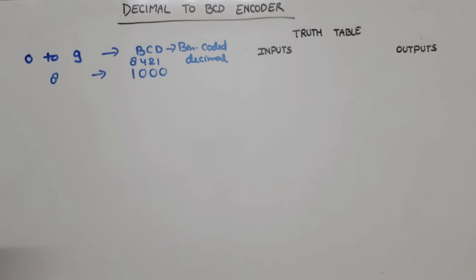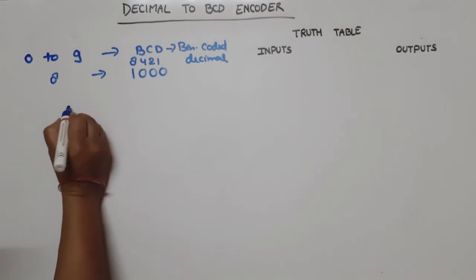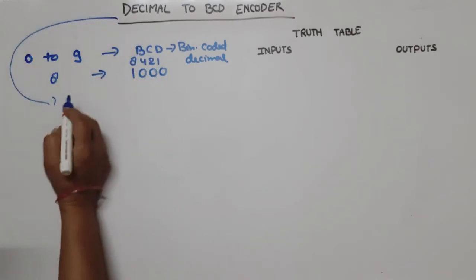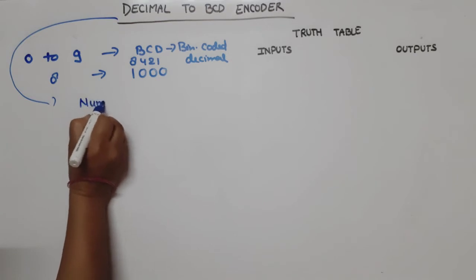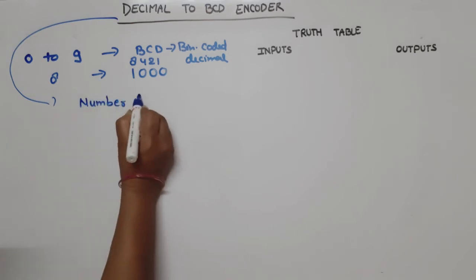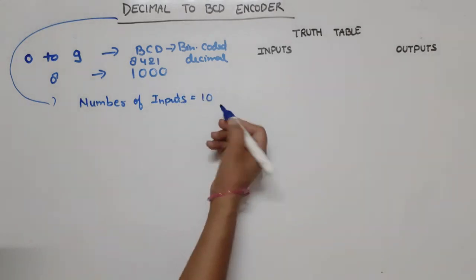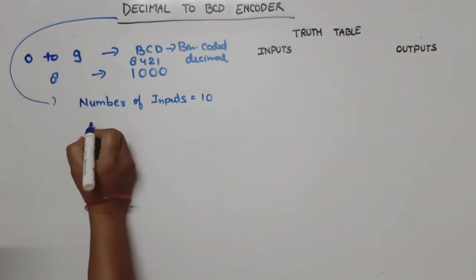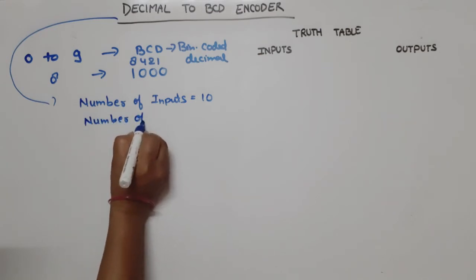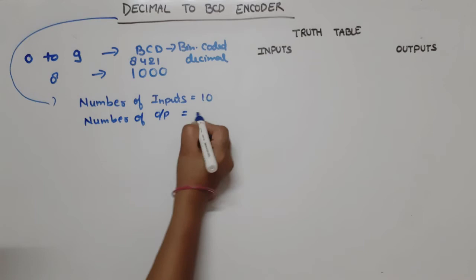Decimal numbers are zero to nine, total ten numbers. In case of decimal to BCD encoder, number of inputs will be equal to ten, and number of outputs will be equal to four.